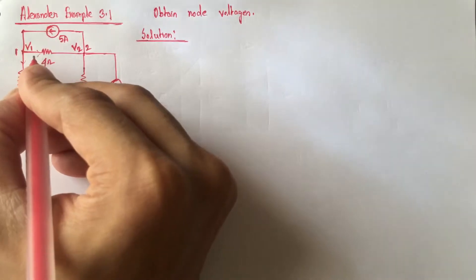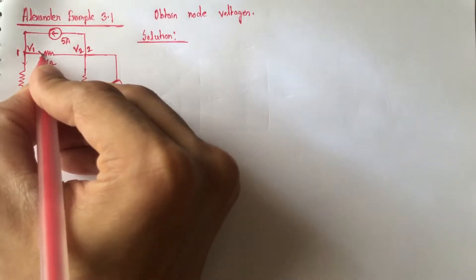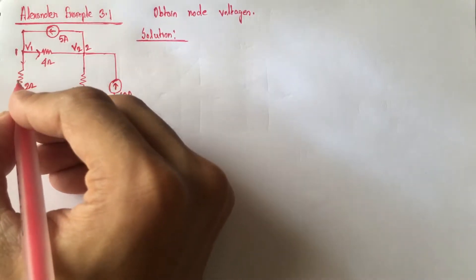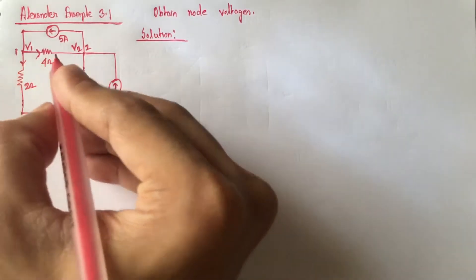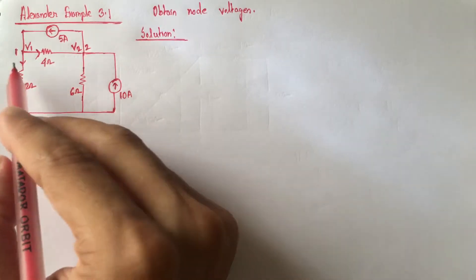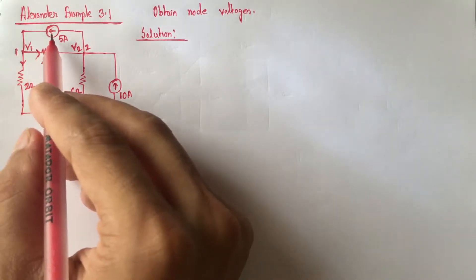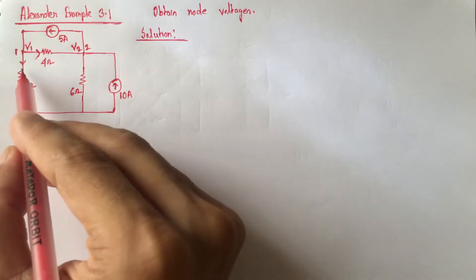If we let current through this path going out from node 1 and current through this path also going out, then if we use Kirchhoff's current law at this point, the summation of these two outgoing currents will be equal to this incoming current.